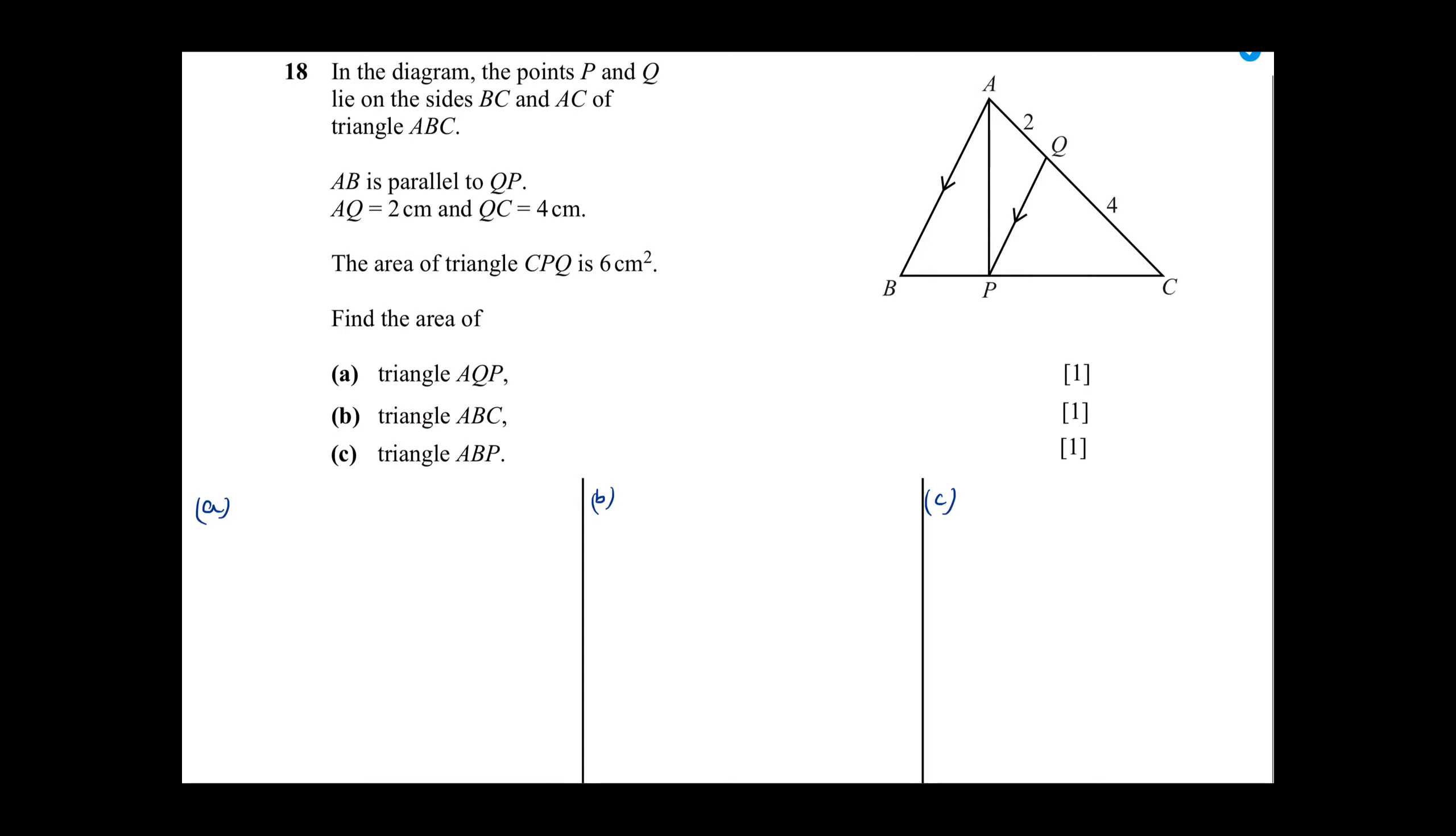In the diagram the points P and Q lie on the sides BC and AC of triangle ABC. AB is parallel to QP, AQ is 2cm and QC is 4cm. The area of triangle CPQ is 6cm². Find the area of triangle